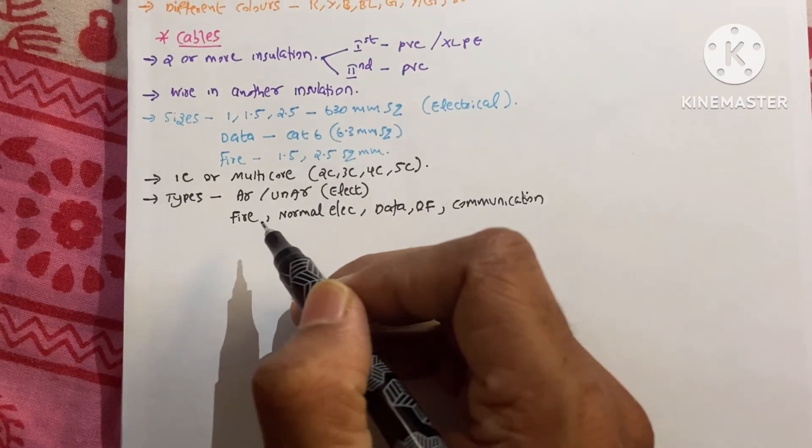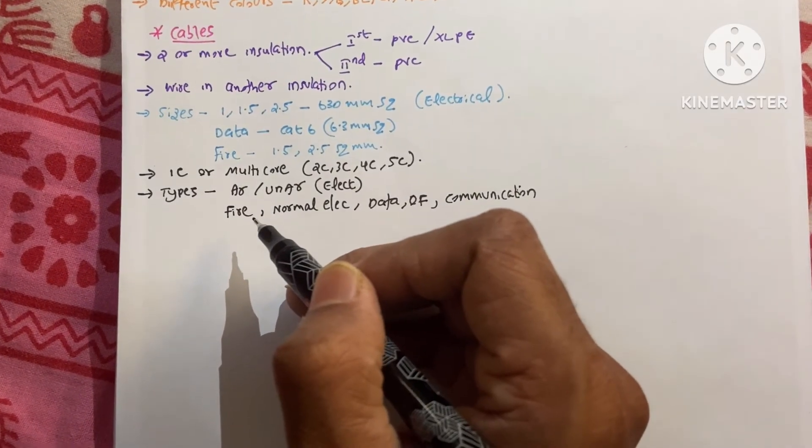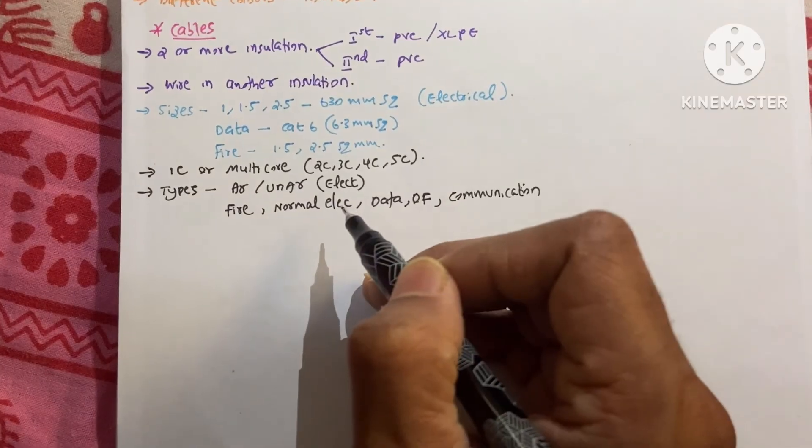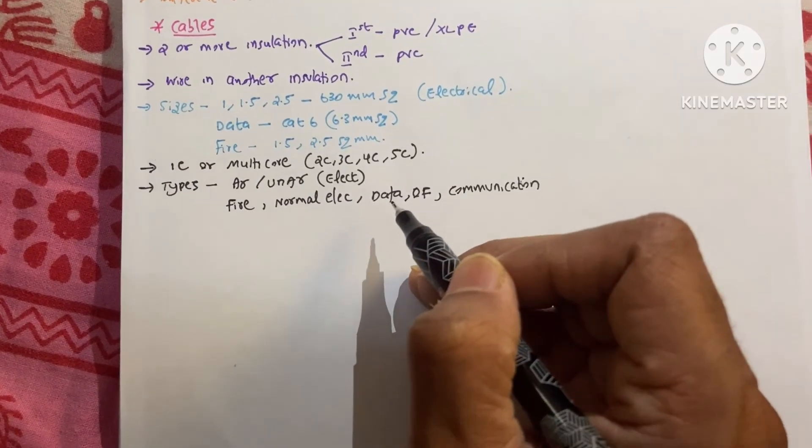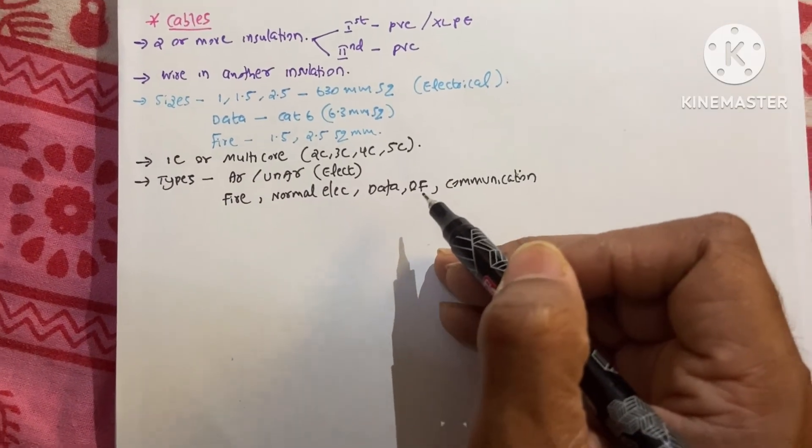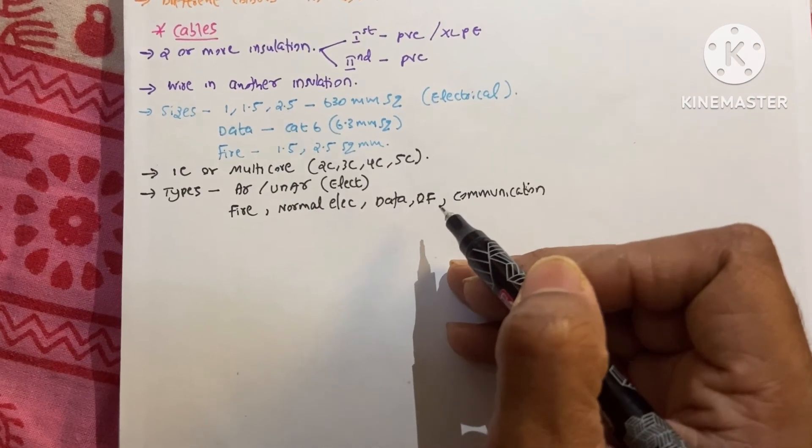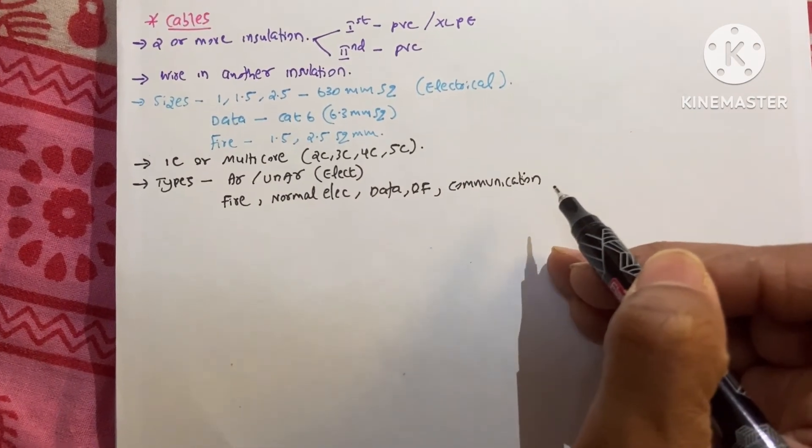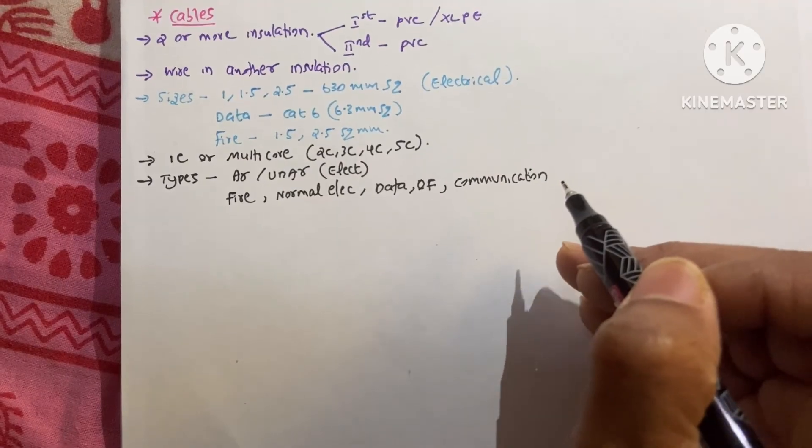And the second types we can say fire rated cables are there. Normal electrical cables are there. Data cables, cat-six like that. And optical fiber cable, communication cables like telephone cables are available in the market.